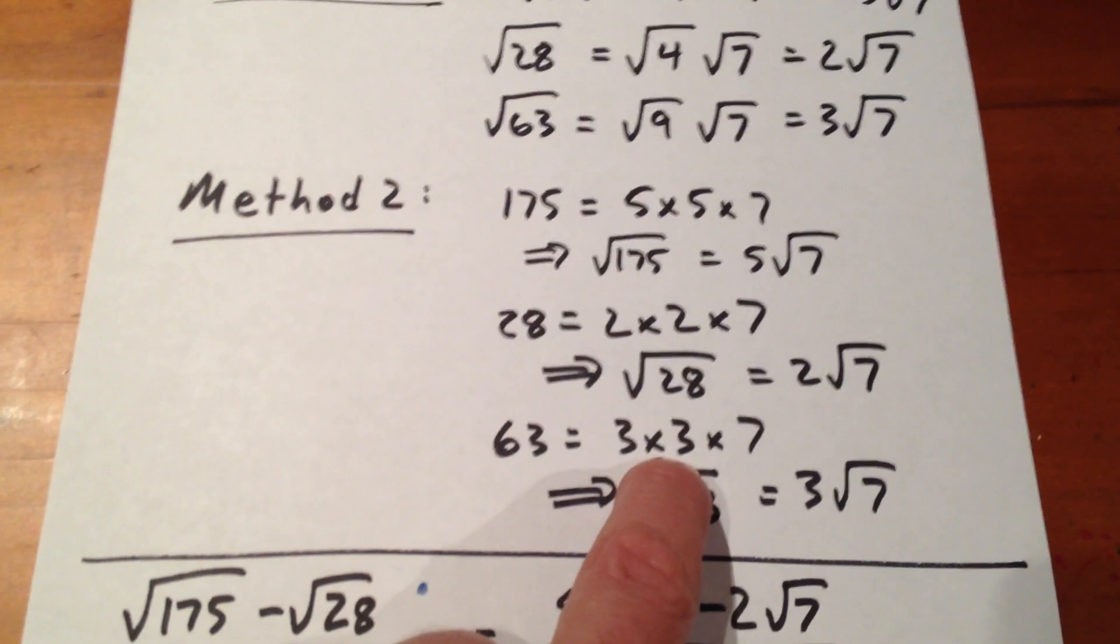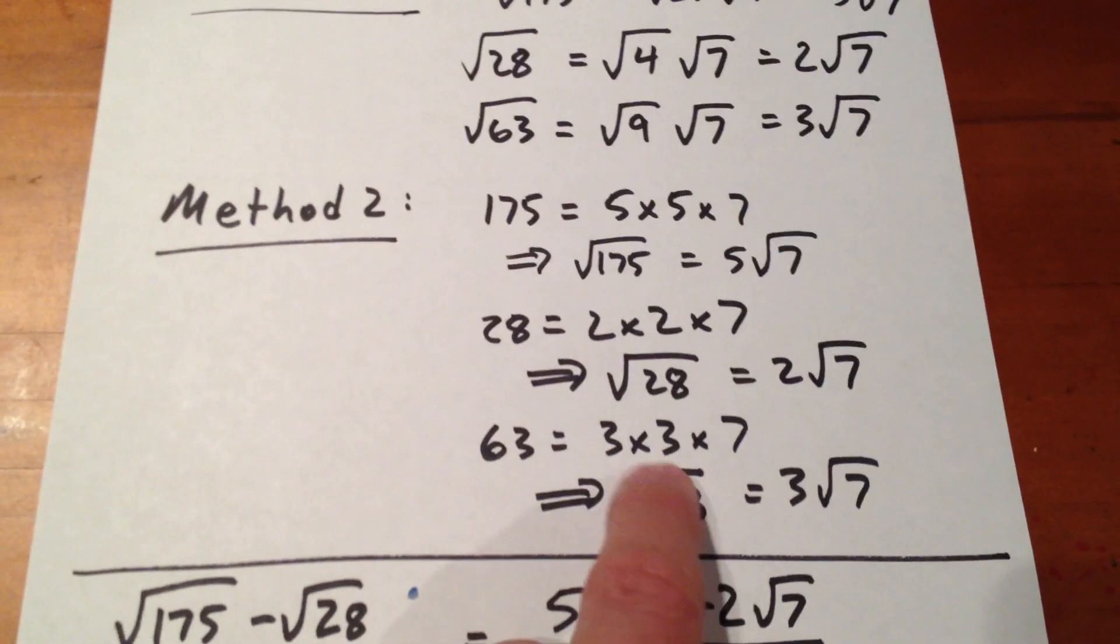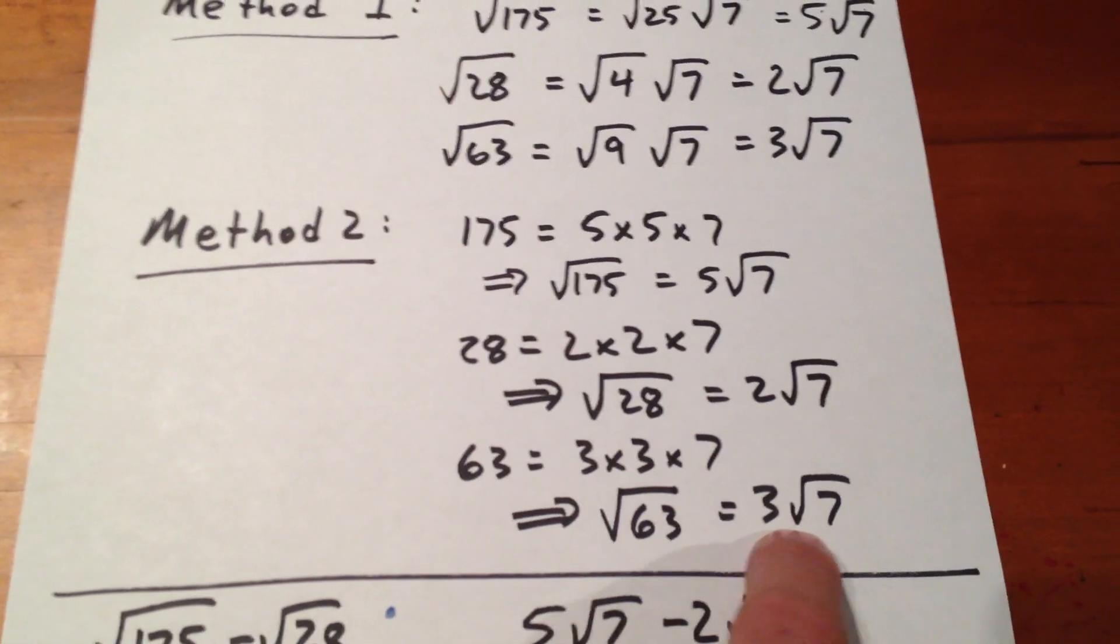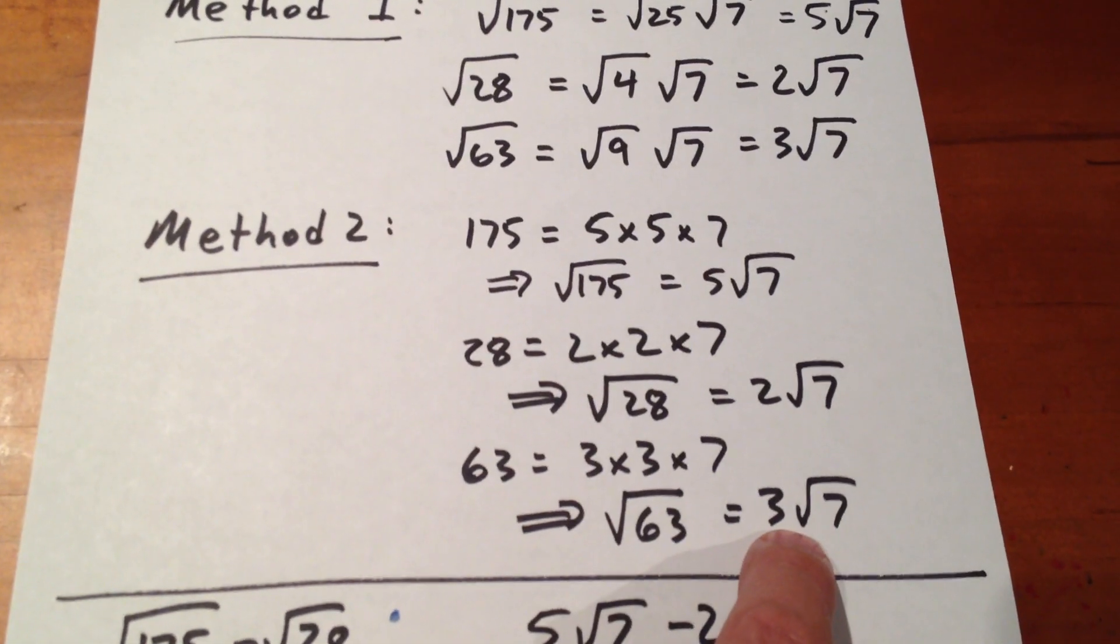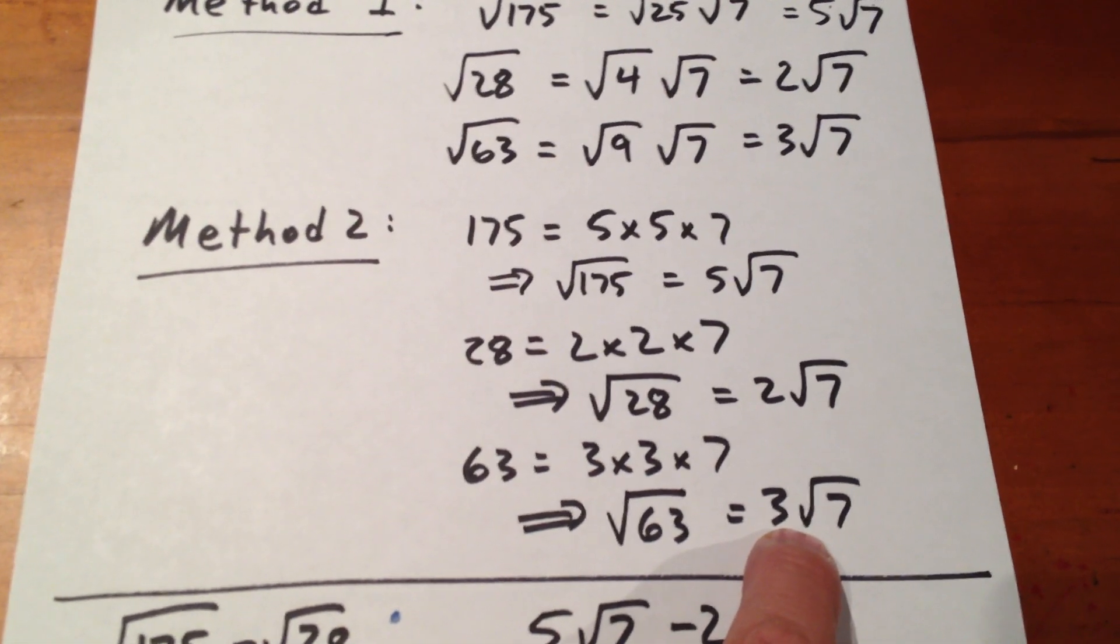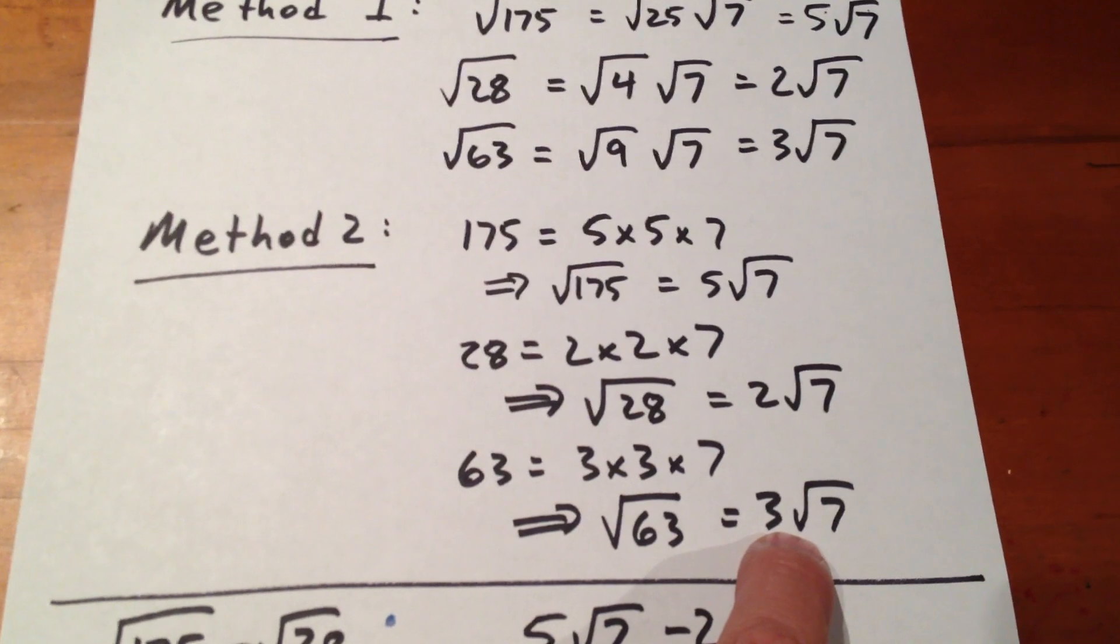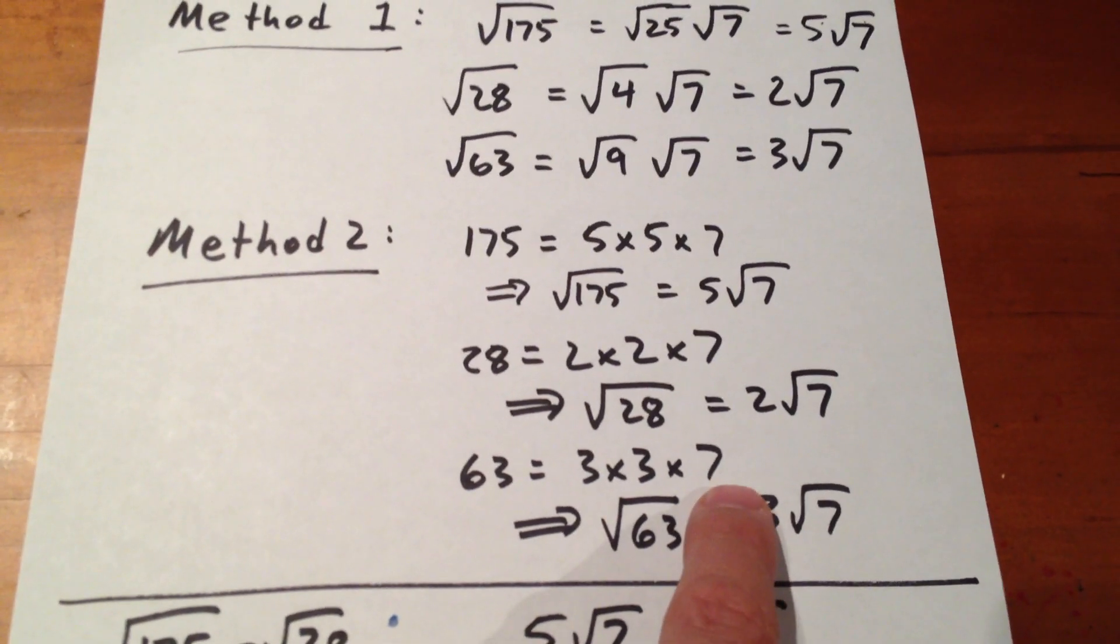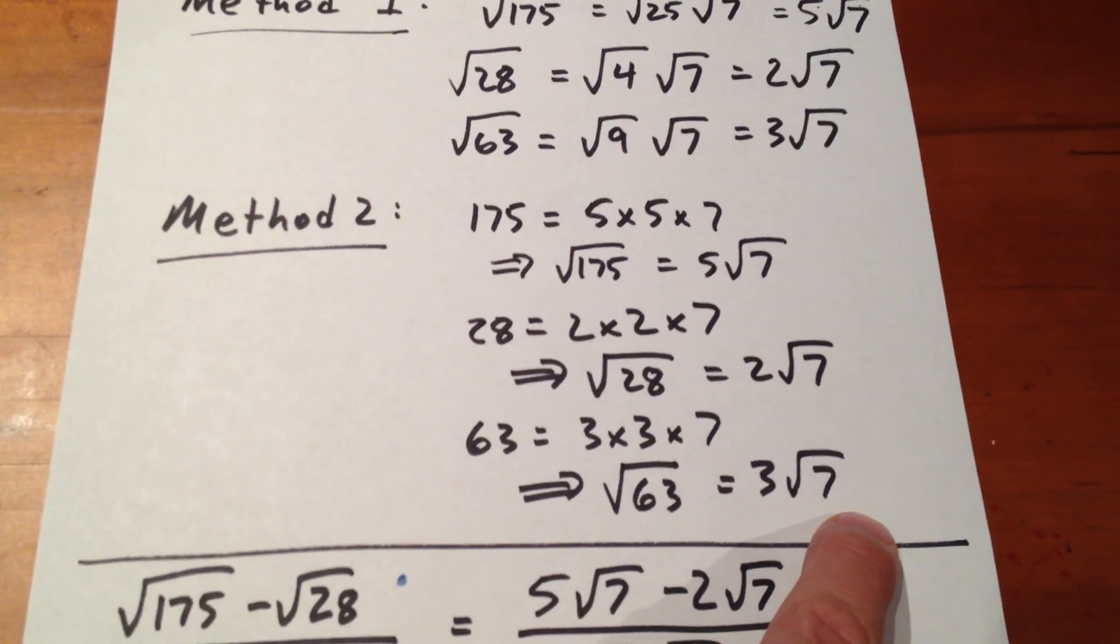Finally, 63 is equal to 3 times 3 times 7, so root 63 is 3 root 7. The 3 appears twice in the prime factor decomposition, so it comes outside the square root sign, and the 7 appears once, so it remains inside.